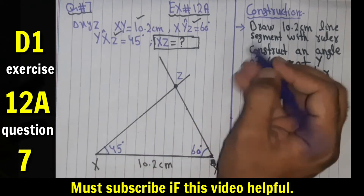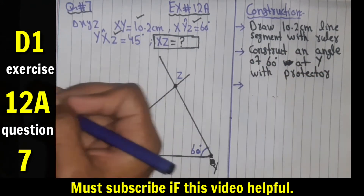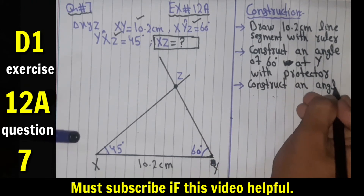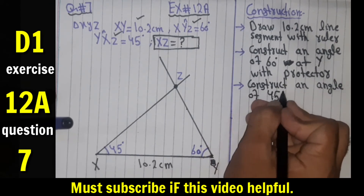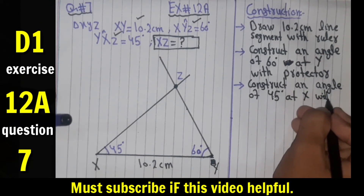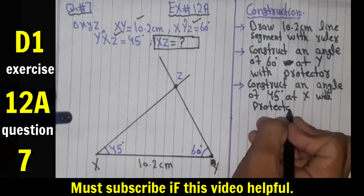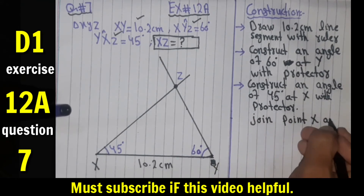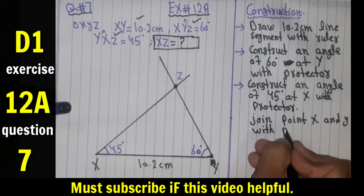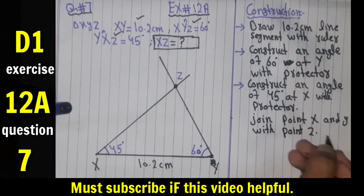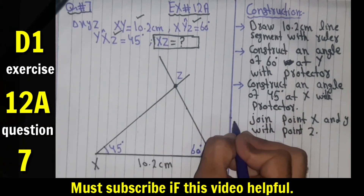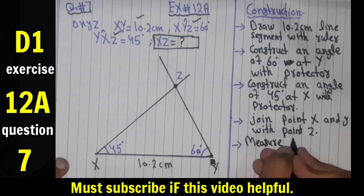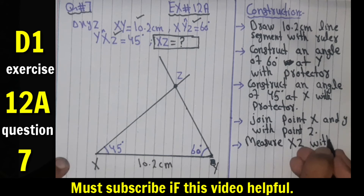Next, on the same line, construct an angle of 45 degrees at X using a protractor. Then join points X and Y with point Z.